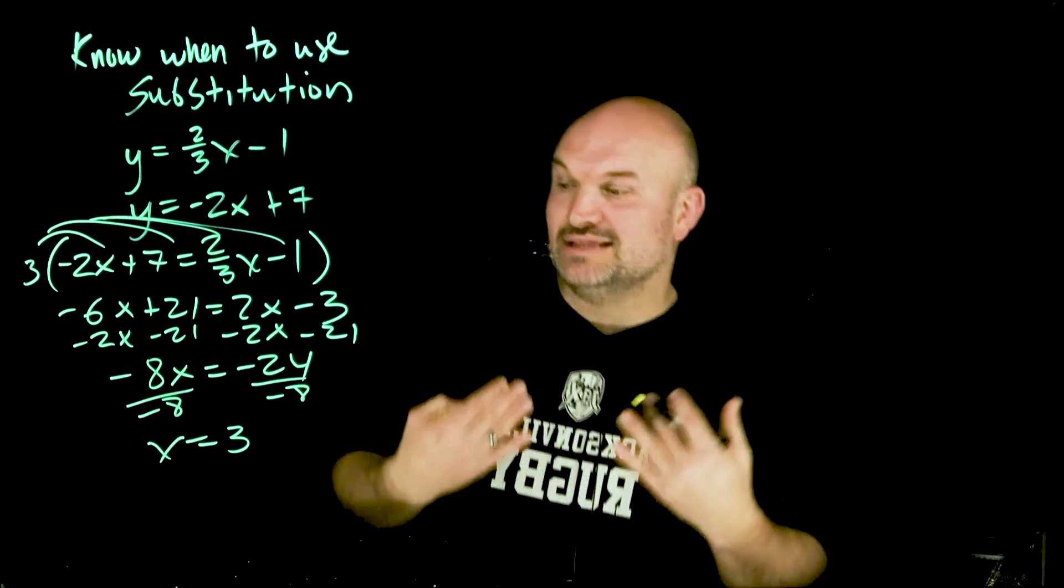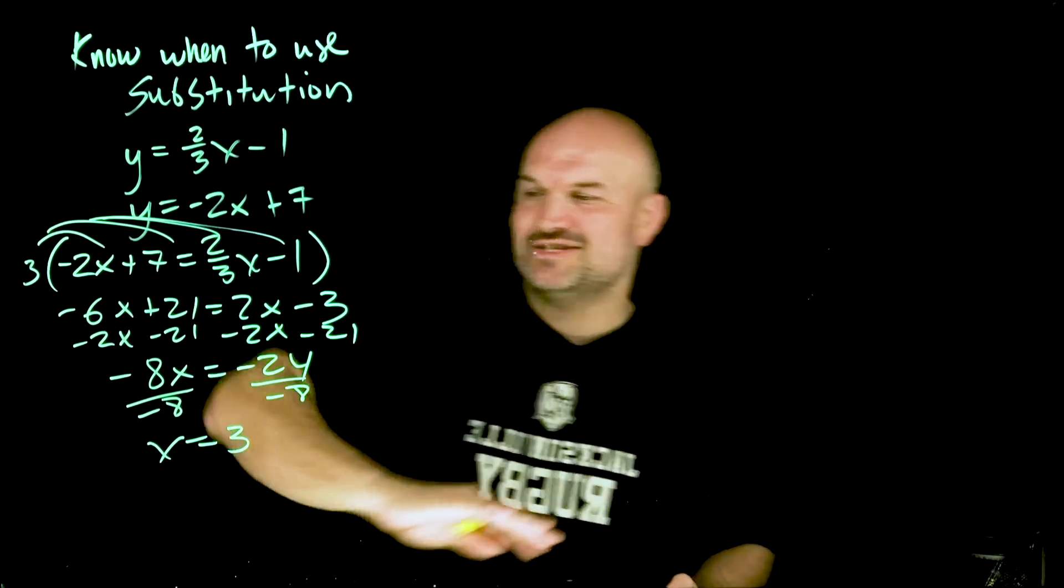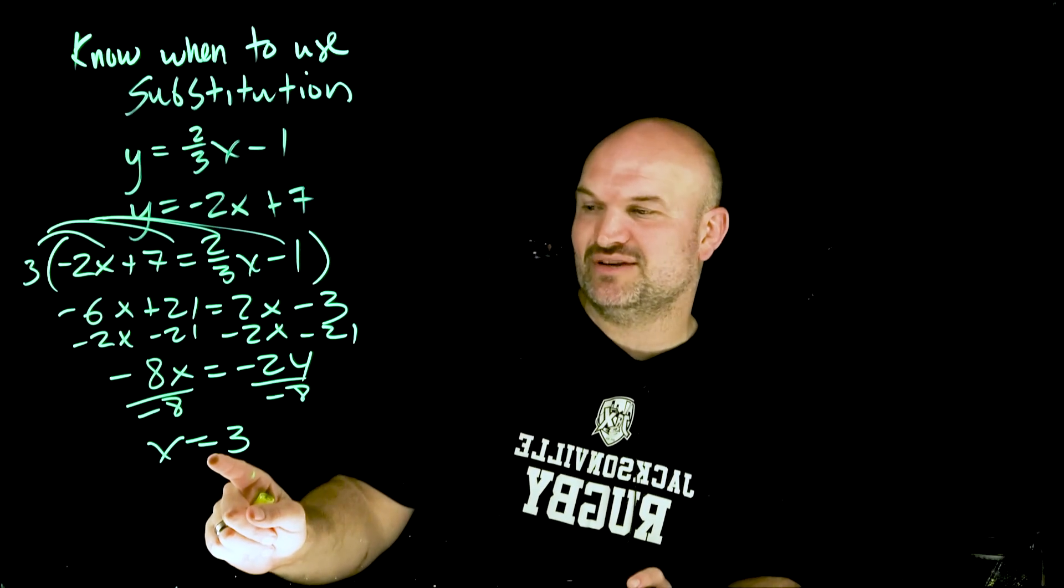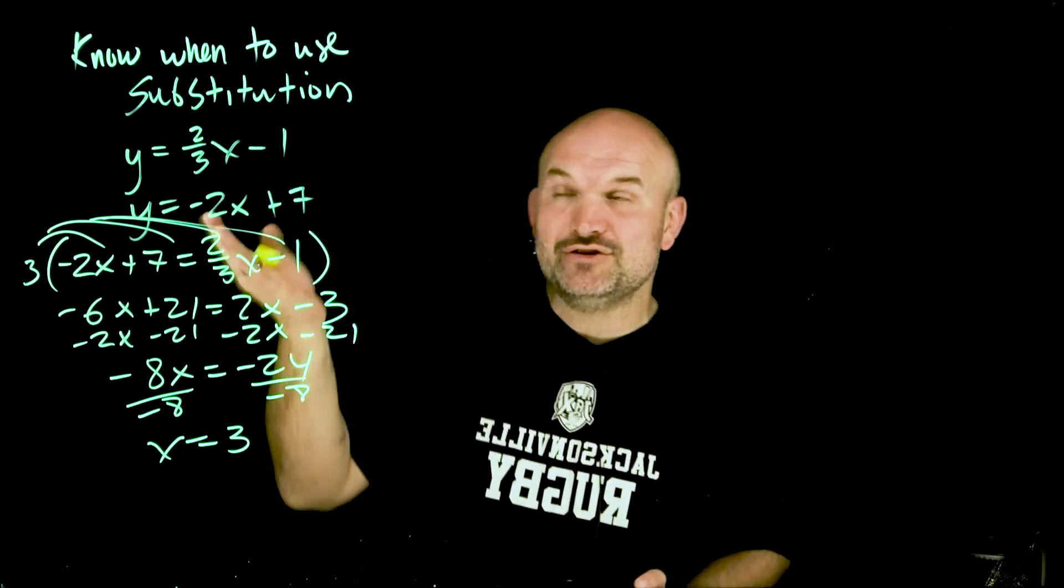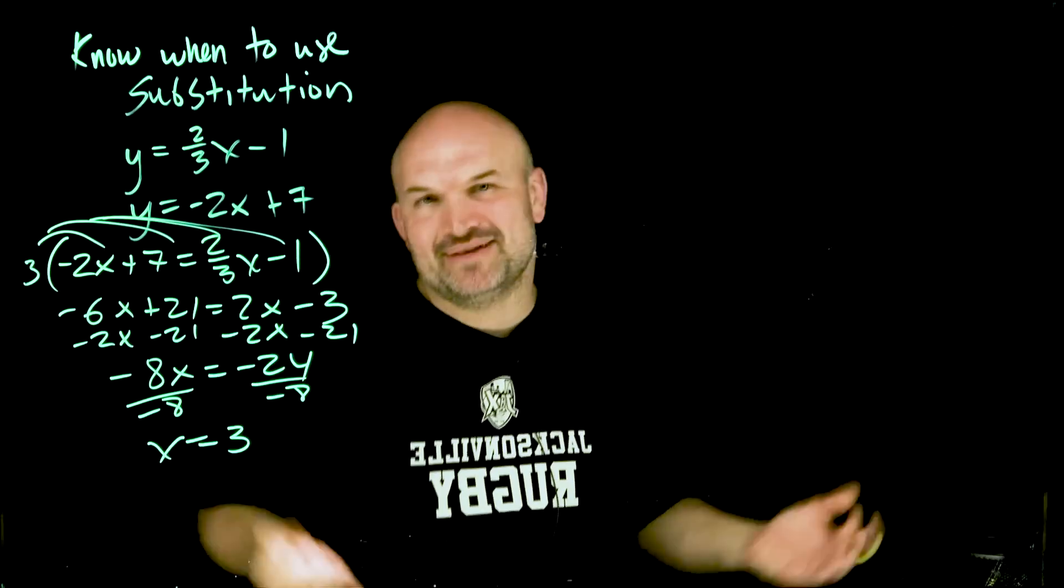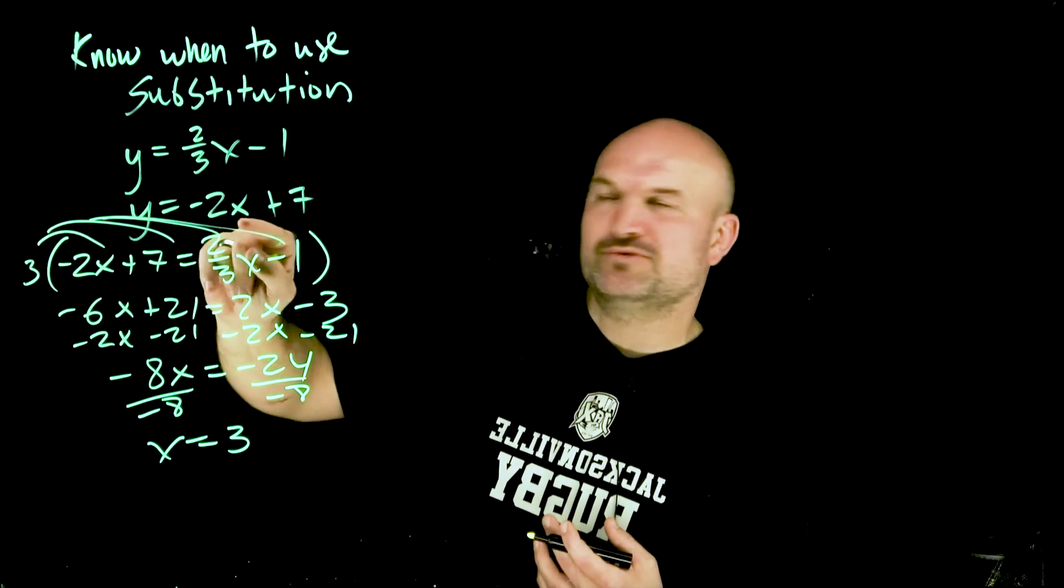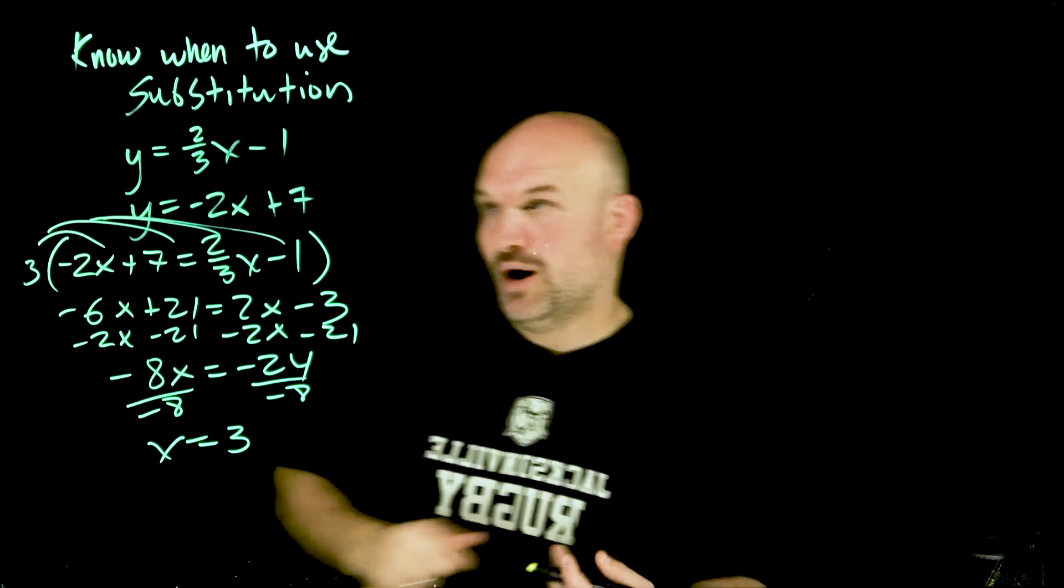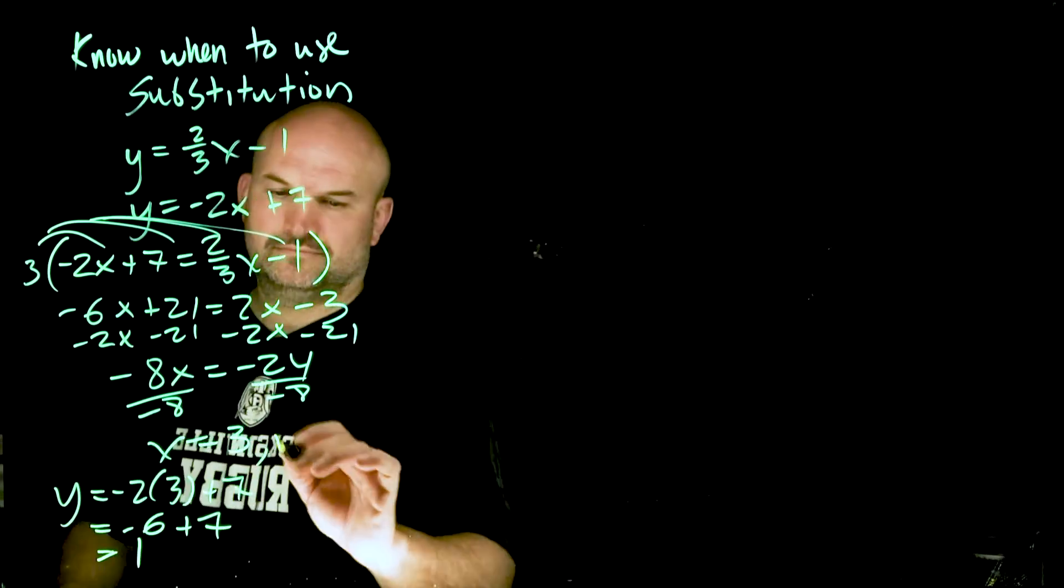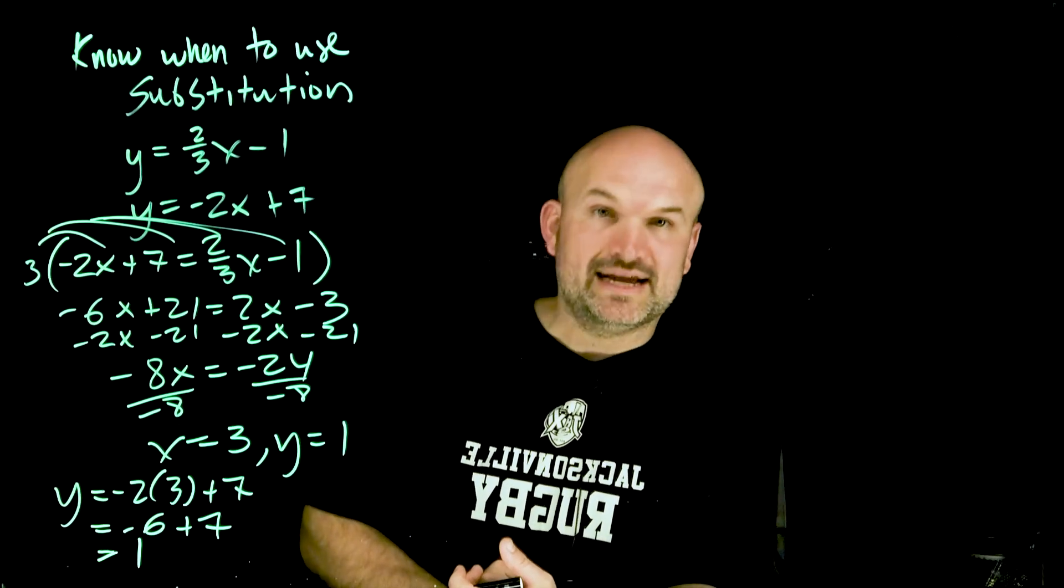Okay so the thing that I like about using the substitution method the best is when I have a variable that's already solved, so when I set them equal to each other I find this one variable 3. All I simply need to do to find y is just plug 3 back into the equation. Again you can pick either one but typically you always want to pick the one where your variable is isolated. I picked a great equation because both of them are isolated for y but I'll just go ahead and plug it into this one so therefore we can find our value of y. So the solution for this system of equation is x = 3 and y = 1.